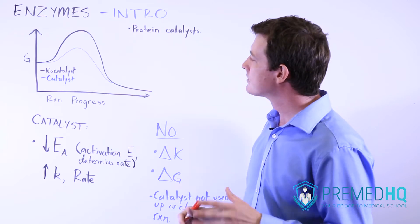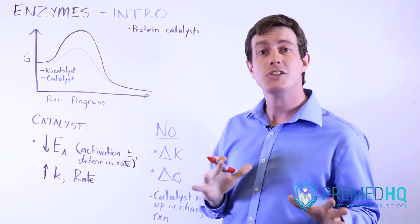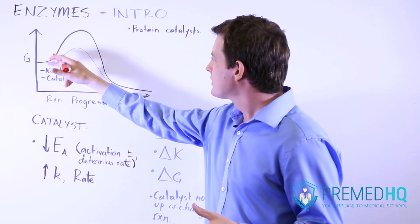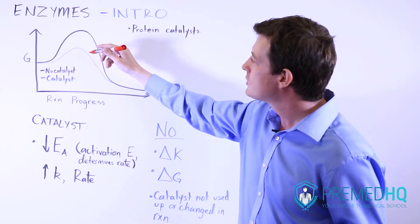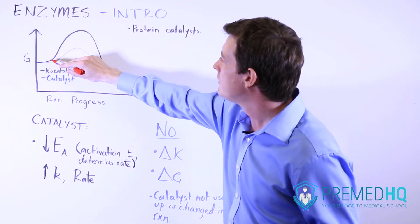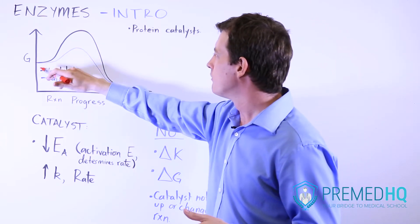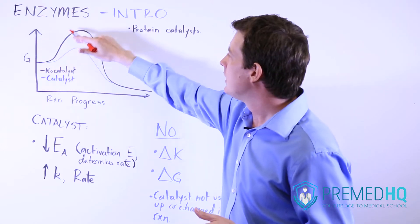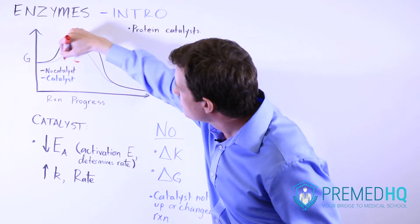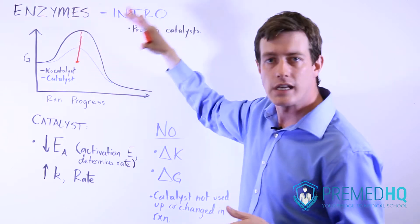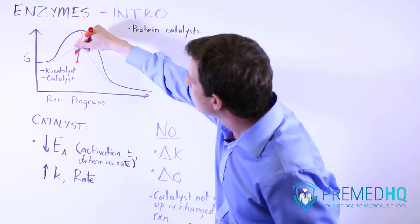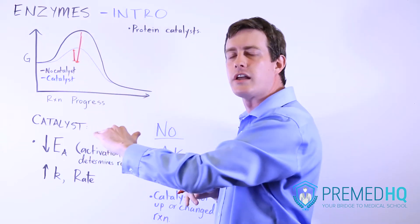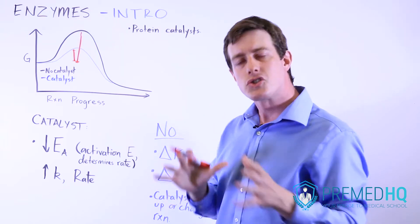Going back to general chemistry, a catalyst has one role: to lower the activation energy. Here we have the curve in black corresponding to the reaction progress without a catalyst, with the y-axis representing Gibbs free energy. Without a catalyst, the activation energy — the energy between the initial position and the transition state, which is a highly activated state — is much greater than in the enzyme-catalyzed situation.